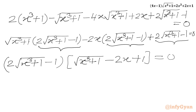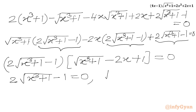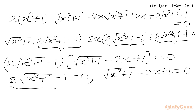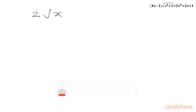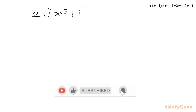Now we have to use the zero product rule. We will get 2 equations. Either 2√(x³ + 1) - 1 = 0, or √(x³ + 1) - 2x + 1 = 0. We will solve the first equation first. So I will add 1 to both sides, and we can write 2√(x³ + 1) equal to 1.